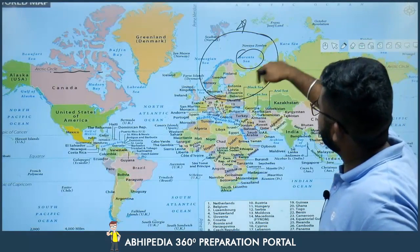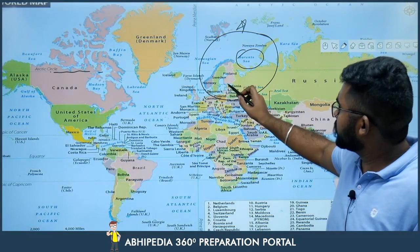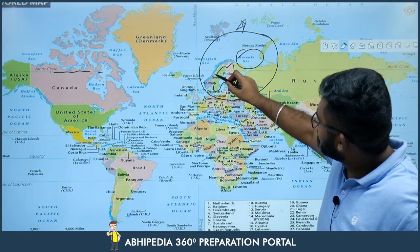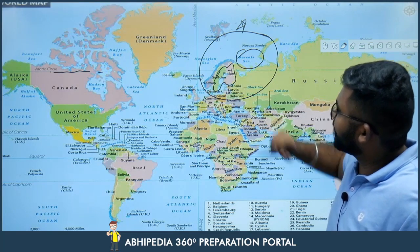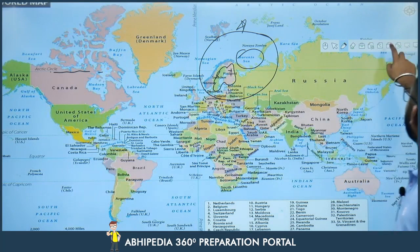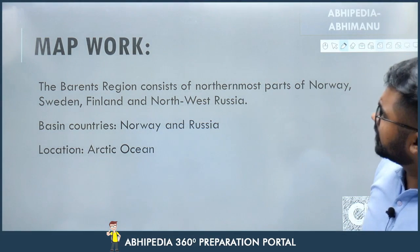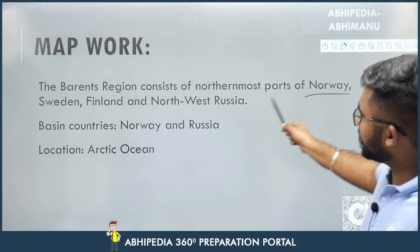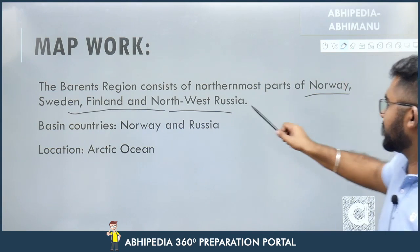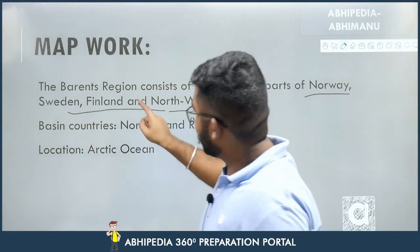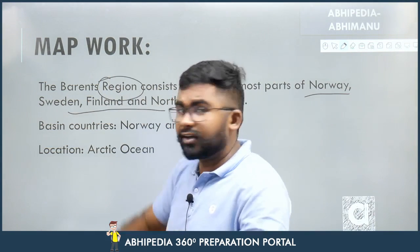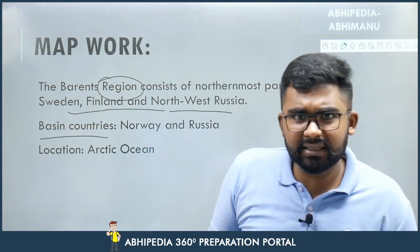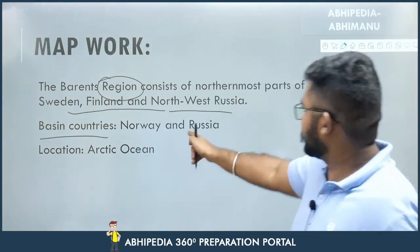On the map, the countries visible alongside the Barents Sea are Russia, Finland, Sweden, and Norway. Note carefully: only Norway's border touches the Barents Sea directly. The Barents Sea region consists of the northernmost parts of Norway, Sweden, Finland, and northwest Russia. The Barents Sea basin countries — those whose coasts touch it — are specifically Norway and Russia.